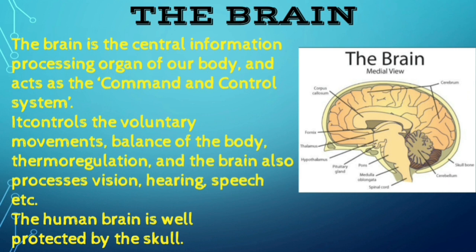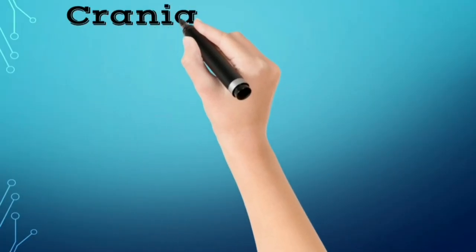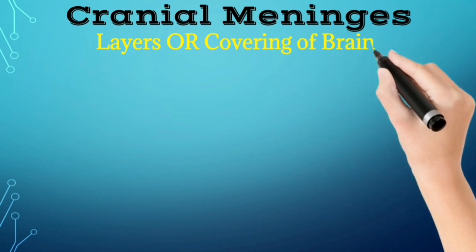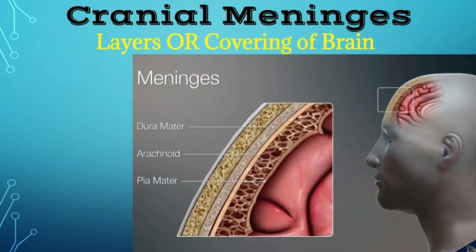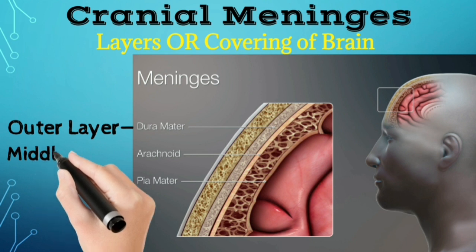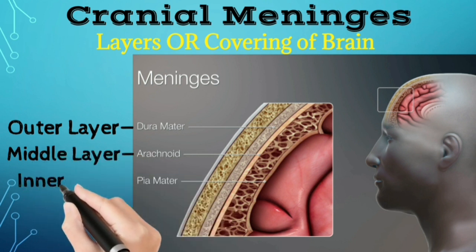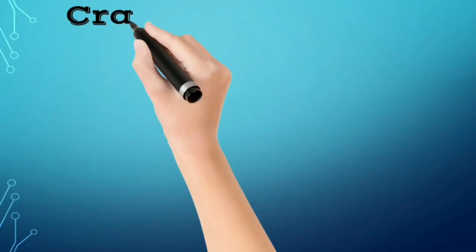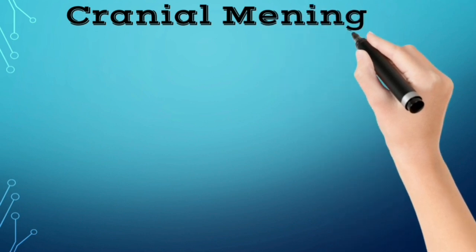Today we are talking about the brain's layers, which we call cranial meninges. The brain is covered by cranial meninges consisting of three layers. The function of the cranial meninges is to protect the brain and spinal cord from mechanical trauma, to support the blood vessels, and to form a continuous cavity through which the cerebrospinal fluid passes.